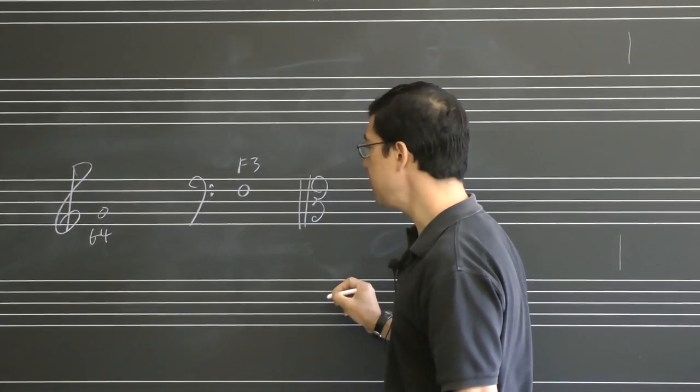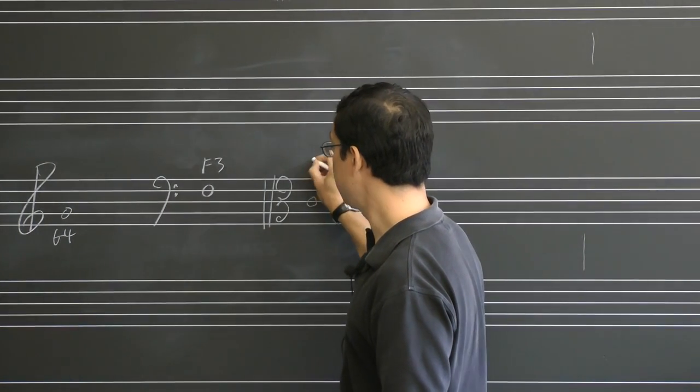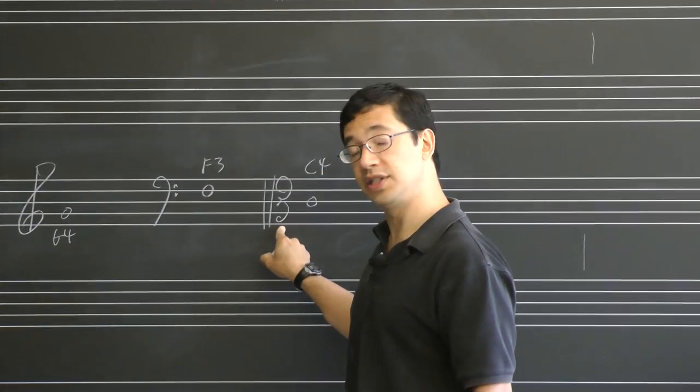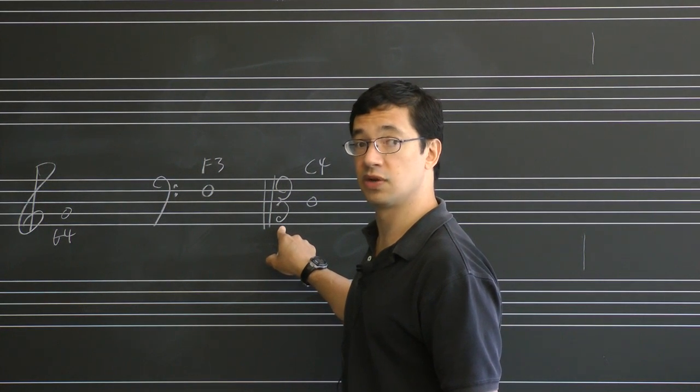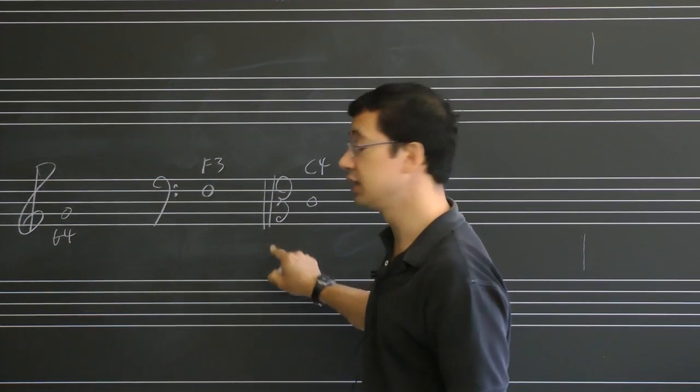The most commonly used C clef is alto clef. When this middle third line is C4, this is used in violas. So every time we look at a score from a string quartet or a symphony, there will be a viola part. You'll need to be able to read this clef.